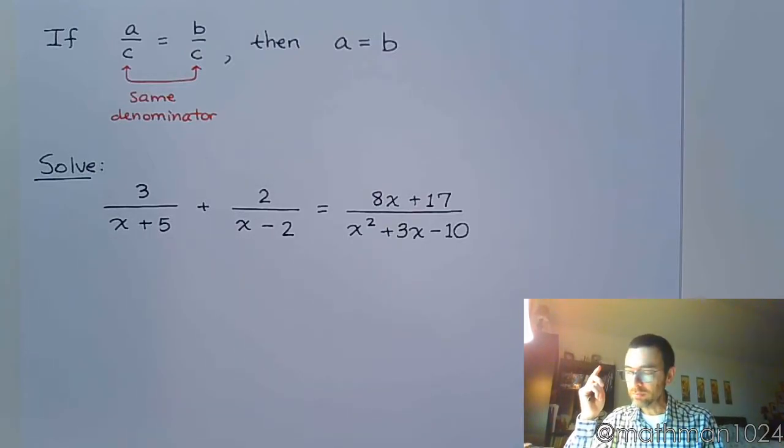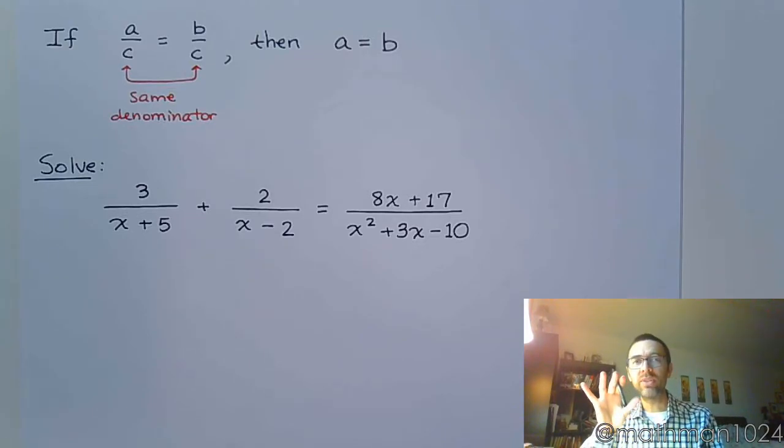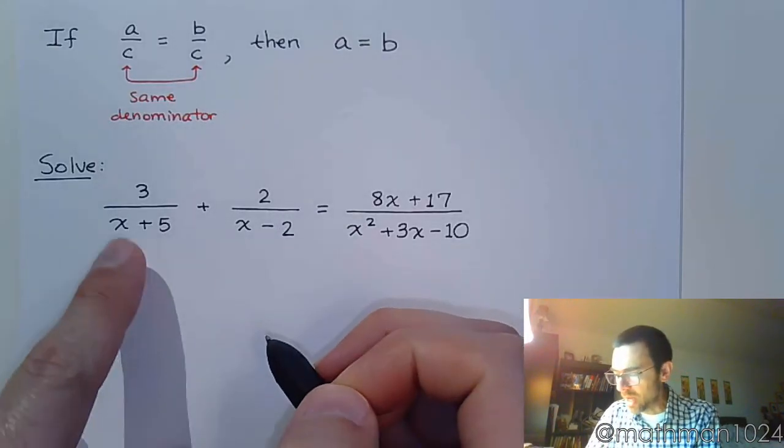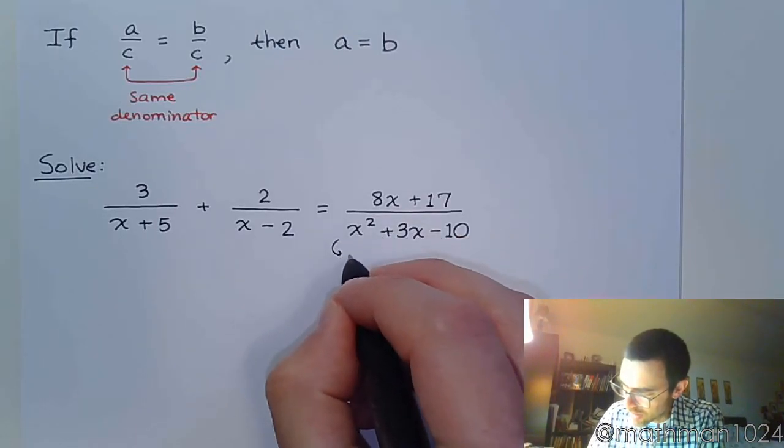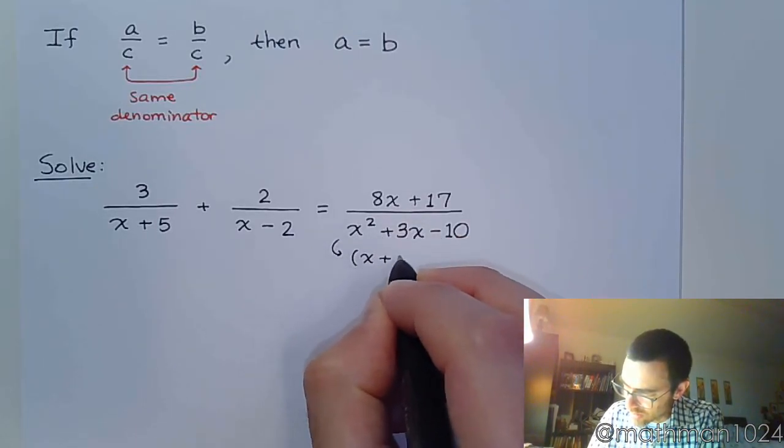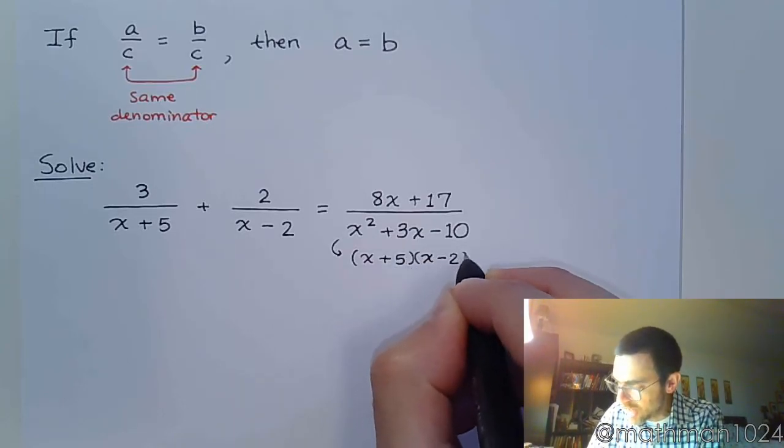So here's what we're going to do. We're going to factor all of these denominators, and we're going to make sure we have the same denominator at the very end. And we're going to do that by putting in the missing factors. For example, you can't factor these two guys, but this guy you can factor, and he factors as x plus 5 times x minus 2.